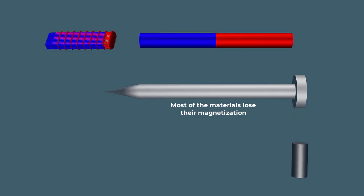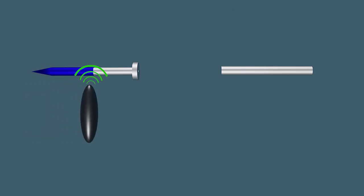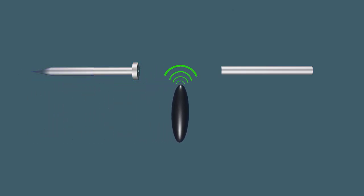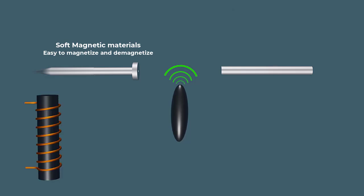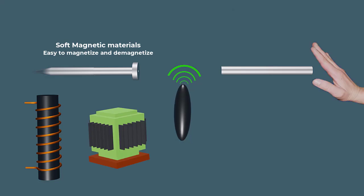When the external magnetic field is removed, most materials lose their magnetization, while some materials retain their magnetic field even after the removal of the external magnetic field. Materials which can be easily magnetized and demagnetized are called soft magnetic materials.